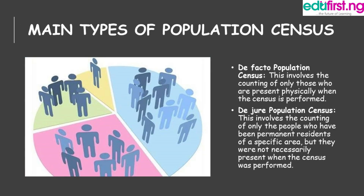We have two main types of population census: the de facto population census and the de jure population census. The de facto census involves the counting of only those who are present when the census is performed, while the de jure census counts only people who are permanent residents of a specific area, but were not necessarily present when the census was performed.